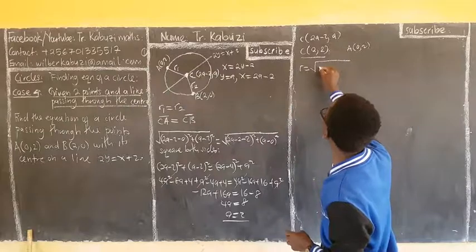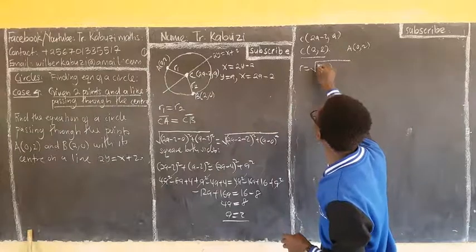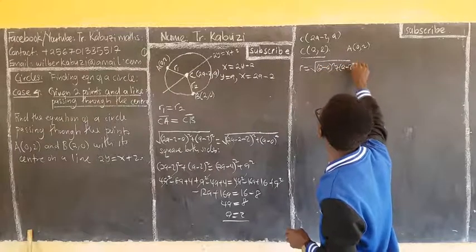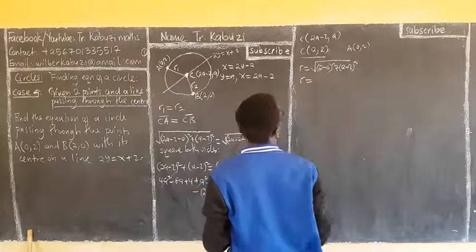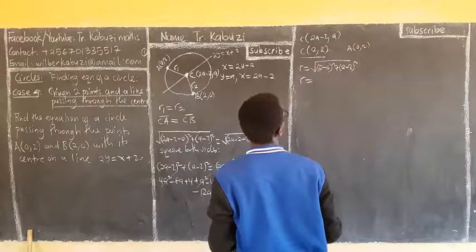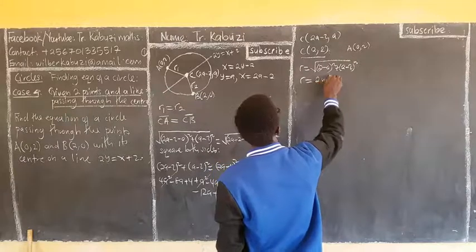What I am going to do, is substitute. So, this minus this, then, plus 2 minus 2, square root. So, that my r will be 2 units. 2 units.